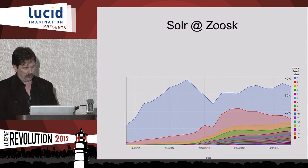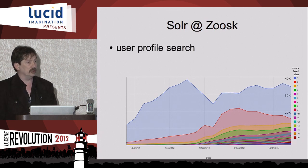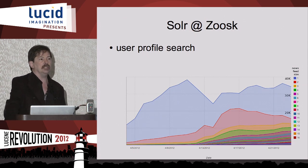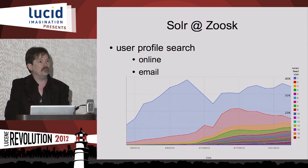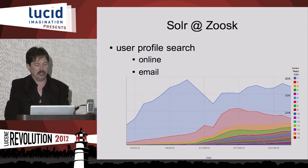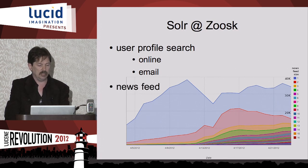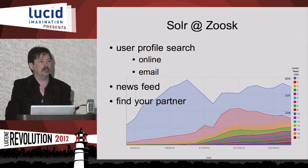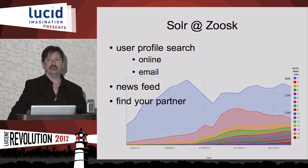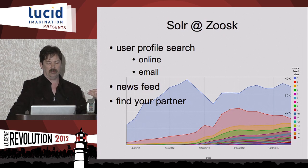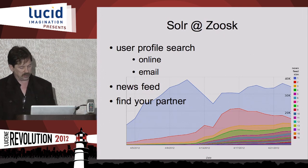How do we run Solr at Zoosk? We have three apps: user profile search, which is the heart of our personals app for finding dating candidates; the newsfeed, a social media feature we also use for email campaigns; and a new product called Find Your Partner, which is a Google Suggest-style feature where you type to find a partner and it returns matches based on partial input.